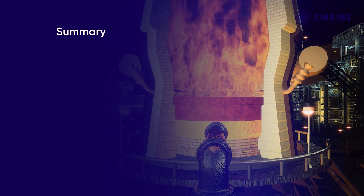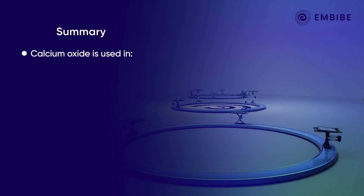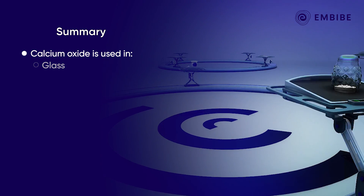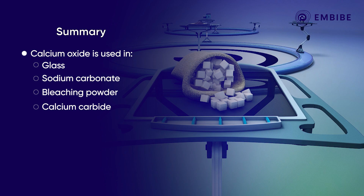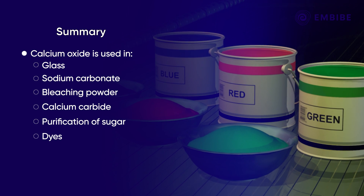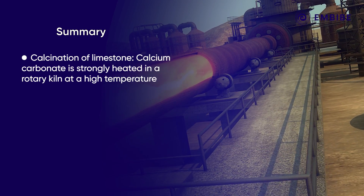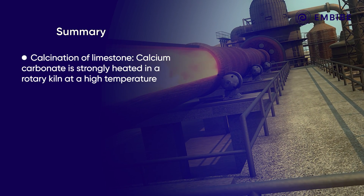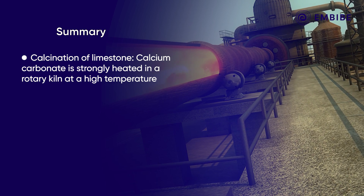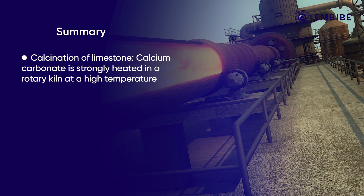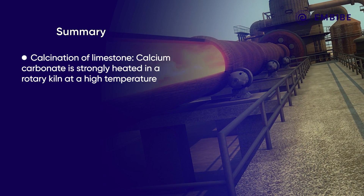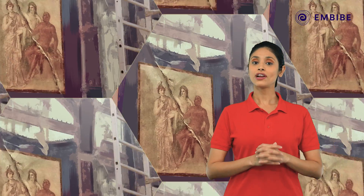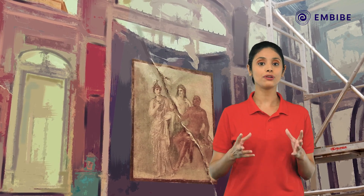To summarize, we have learned how calcium oxide is widely used in many industries — including glass, sodium carbonate, bleaching powder, calcium carbide, purification of sugar, and manufacture of dyes. Limestone or calcium carbonate is strongly heated in a rotary kiln at 1070 to 1270 kelvin; this process is called calcination of limestone.